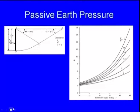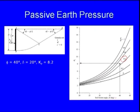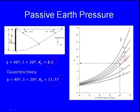Using the chart for phi = 40° and delta/phi = 0.4, Kp from the non-planar failure surface is approximately 8.2. By Coulomb's theory for phi = 40° and delta = 20°, Kp = 11.77. By Rankine's theory, Kp = 4.6. So the actual Kp value lies between Rankine's and Coulomb's theories.